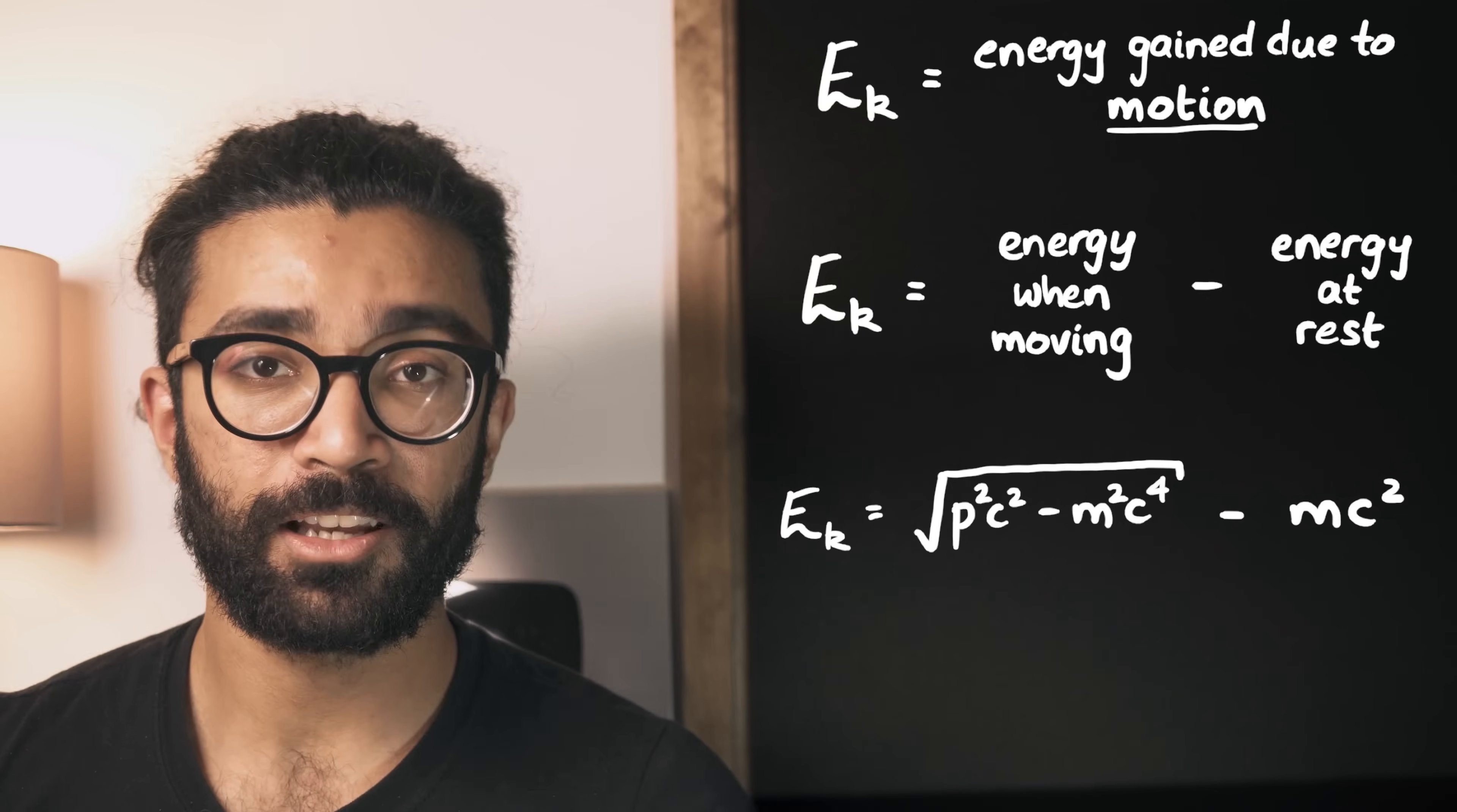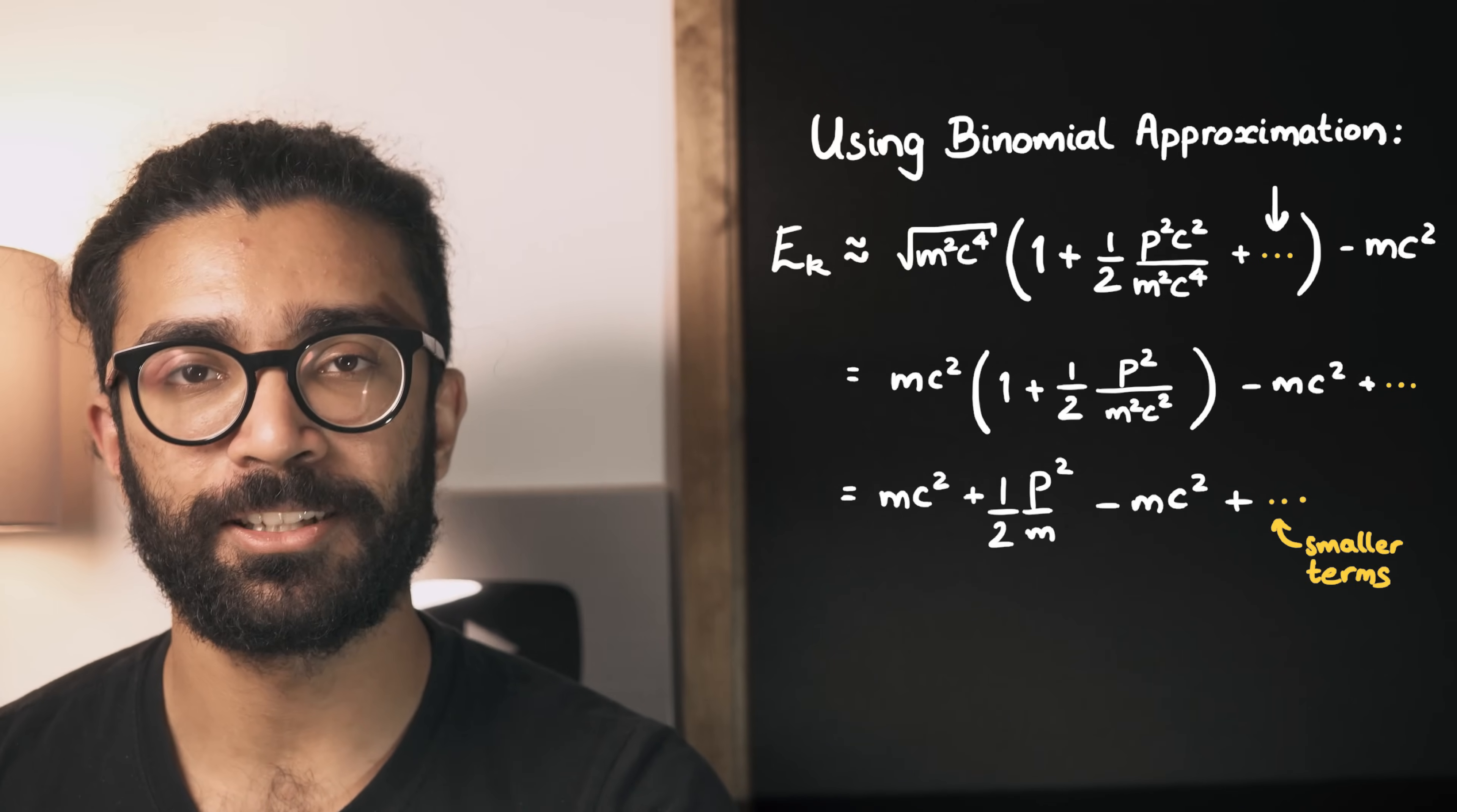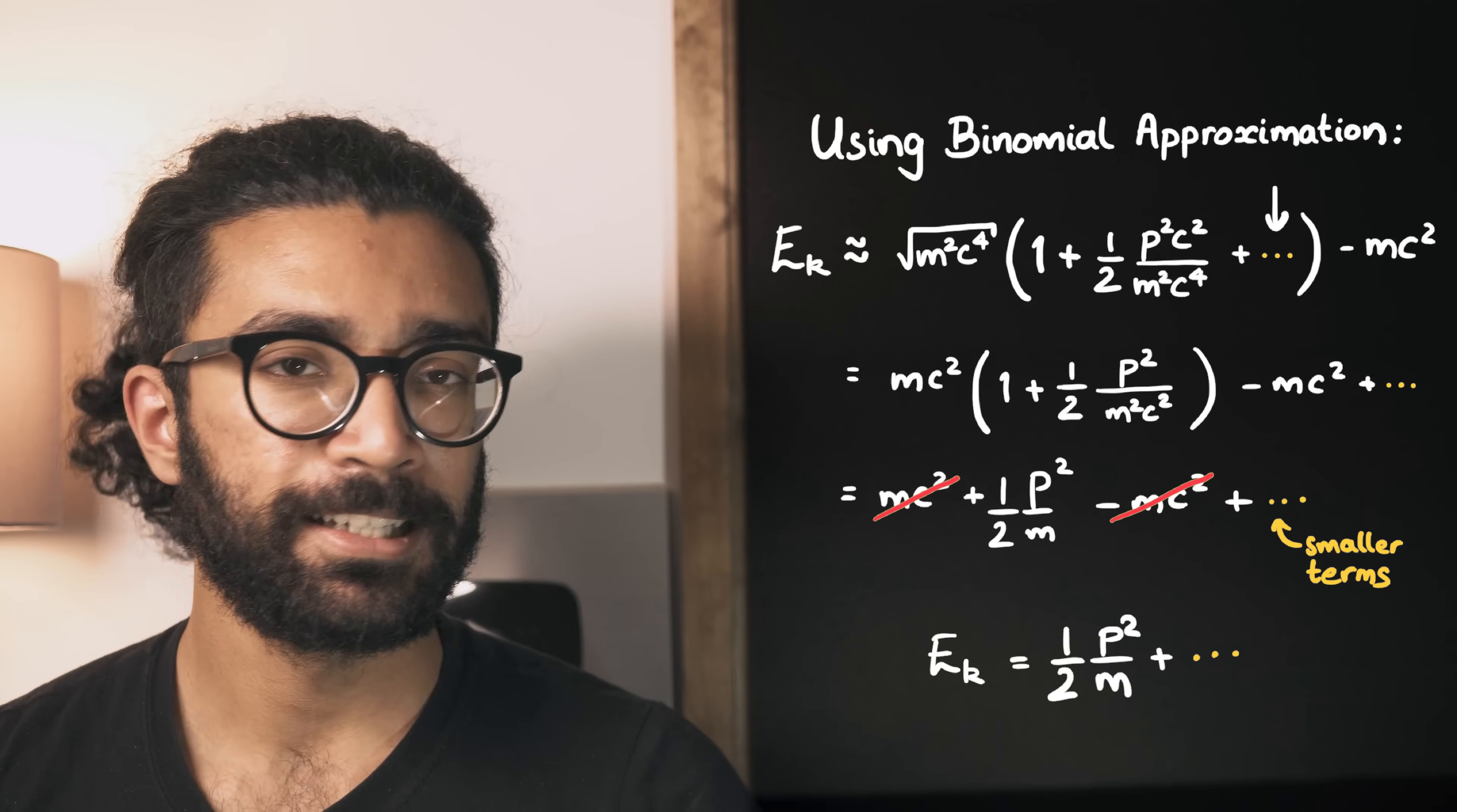Now, when the object is moving fairly slowly, meaning much more slowly than the speed of light, we can use what is known as the binomial approximation just to make the maths a little bit less busy. Again, if you want to know more, then links in the description below. But when we expand out these brackets, we see that there are lots of terms that we haven't yet written. Infinitely many, in fact, that get smaller and smaller in size. Now this mc squared here cancels with this minus mc squared. And thus the biggest and most important term in the kinetic energy of our relativistic particle is this one.